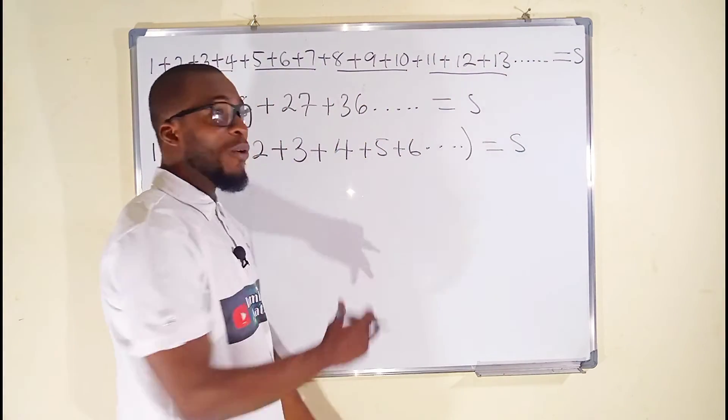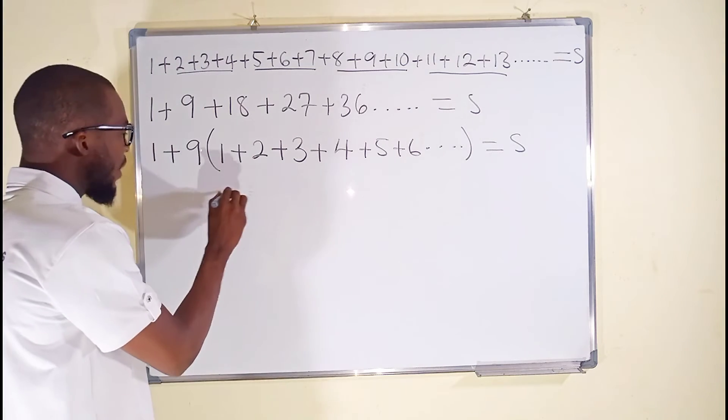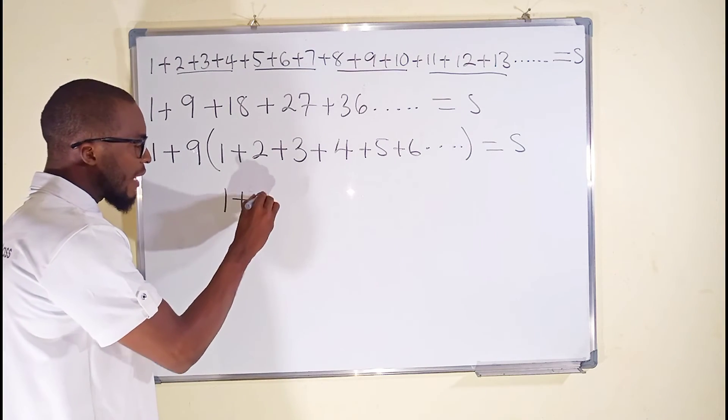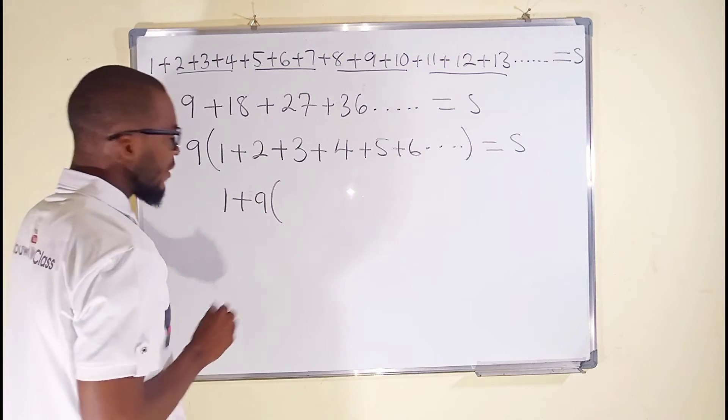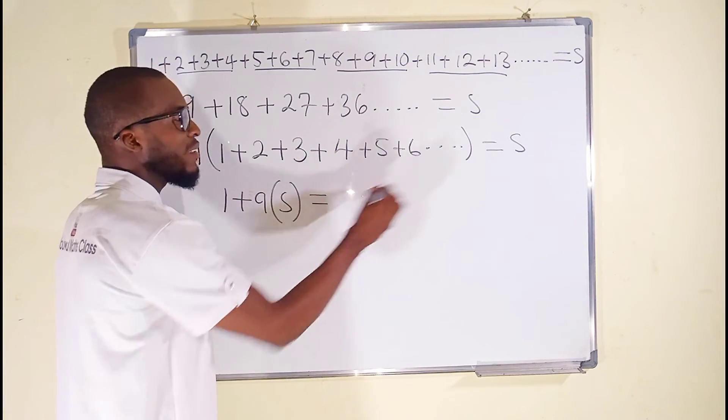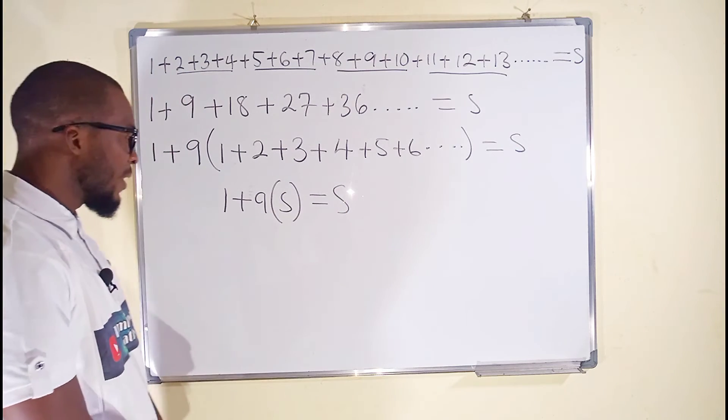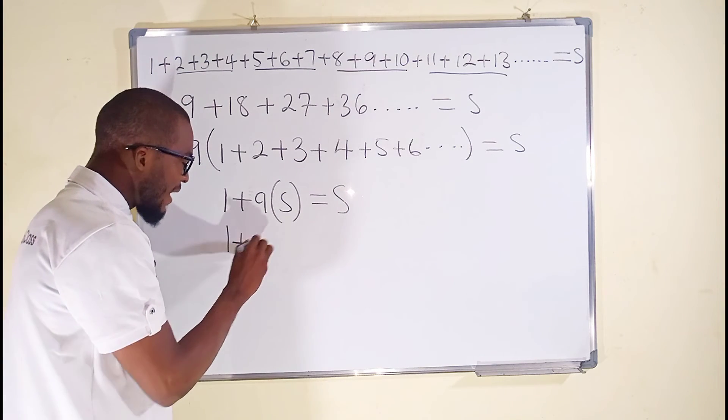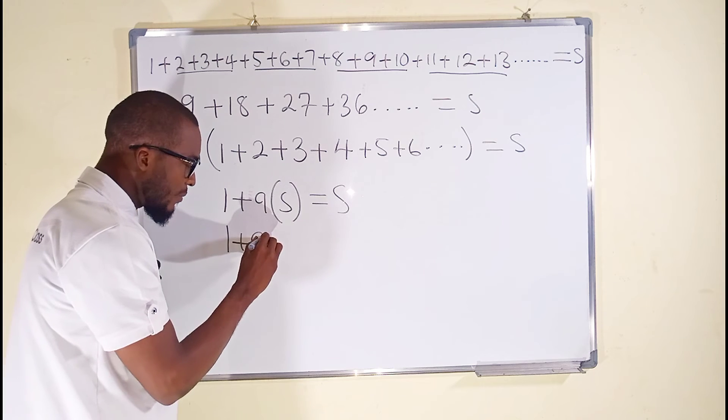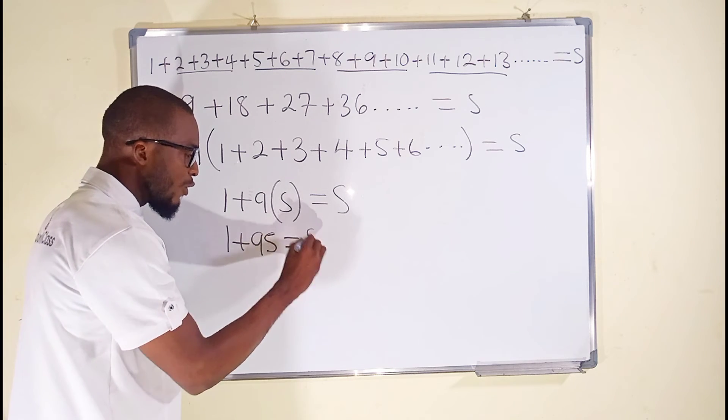So instead of this, we can now write S. So we have 1 + 9 instead of this 1 + 2 in that order, we have S. And we have set this one initially to be equal to S. 1 + 9S after expanding. The whole of this is equal to S.